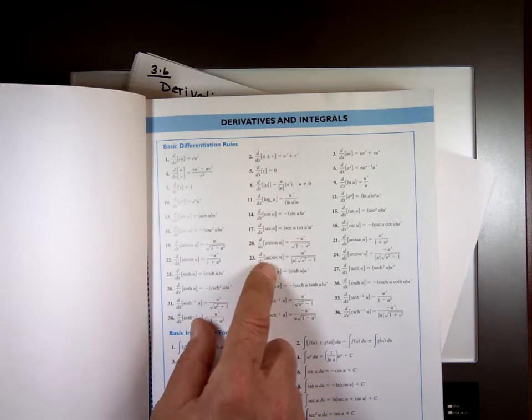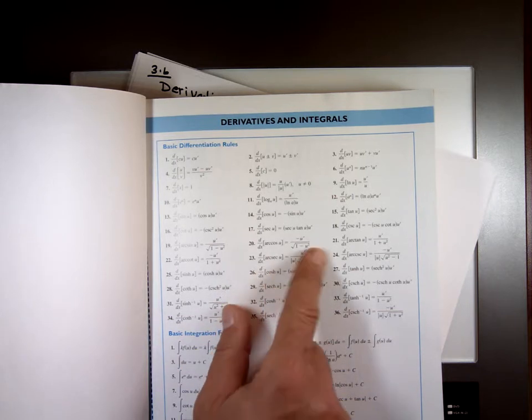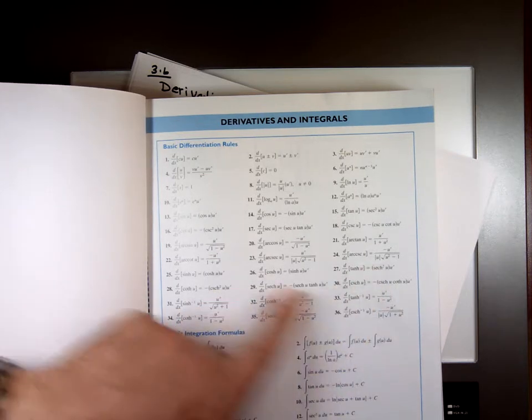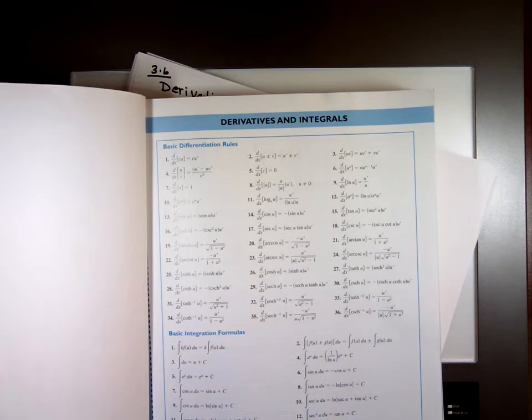Arc secant, the derivative of that is u prime over the absolute value of u times square root of u squared minus 1. And the cosecant is the same thing as the secant with the exception of the minus. So we need to memorize these six derivatives.